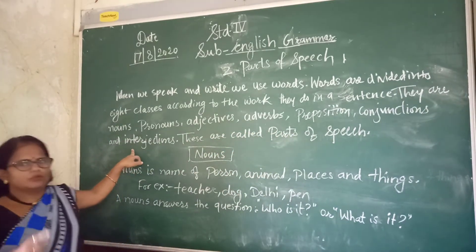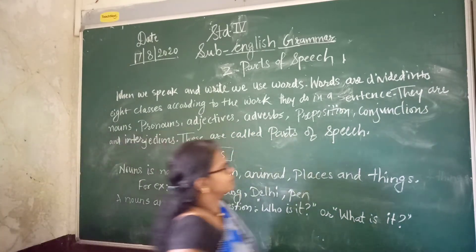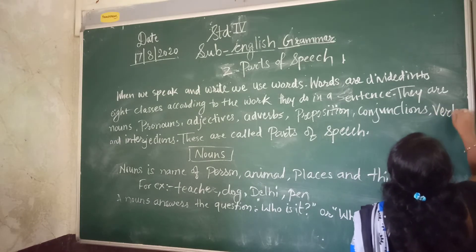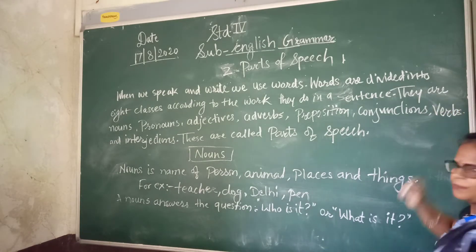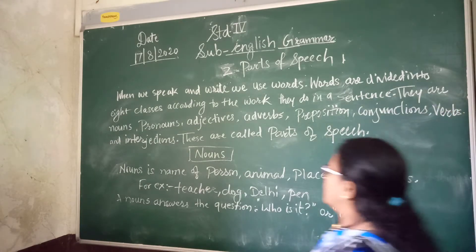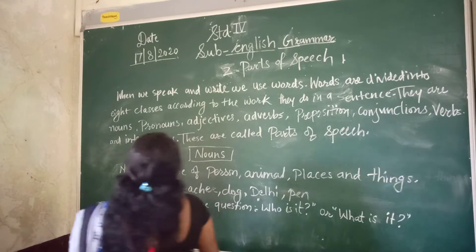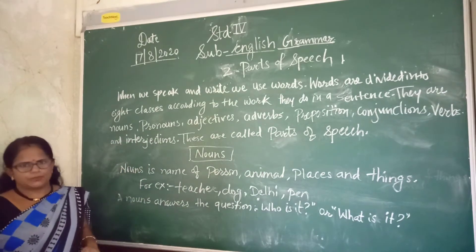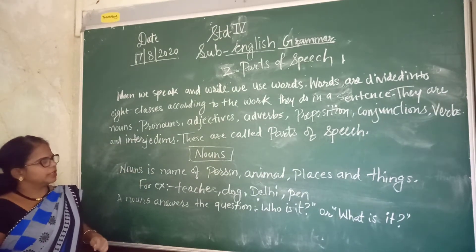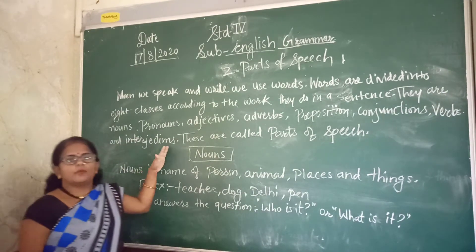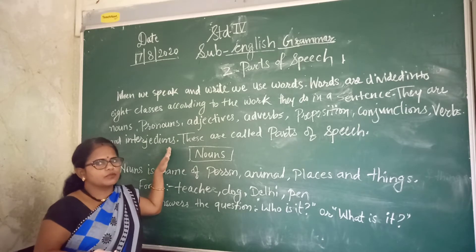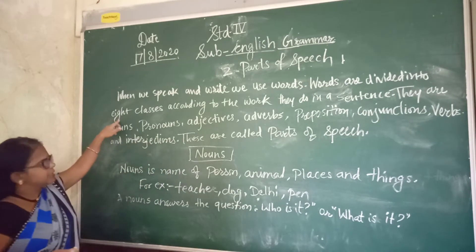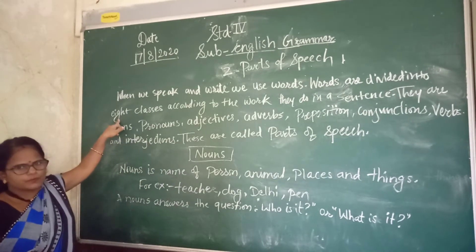One word is left — that is verbs. Now these are called the Parts of Speech. How many classes of parts of speech? 8 classes of parts of speech.